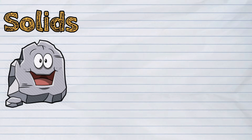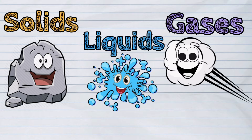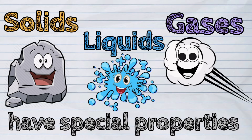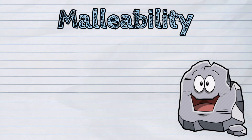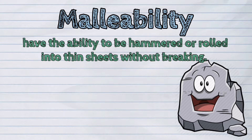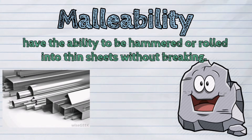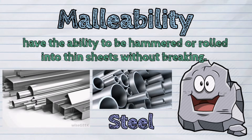Solids, liquids, and gases have special properties. Solids have unique properties. The first one is malleability. It is the property of matter that has the ability to be hammered or rolled into thin sheets without breaking. Some metals, such as steel, exhibit malleability.